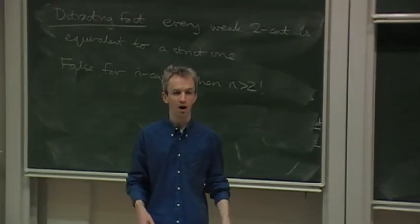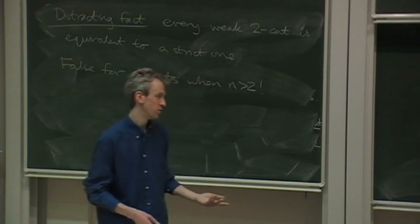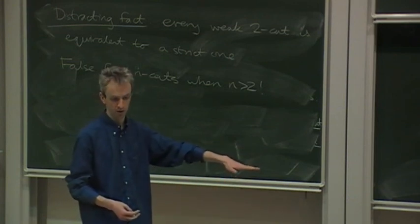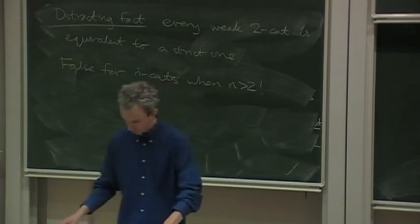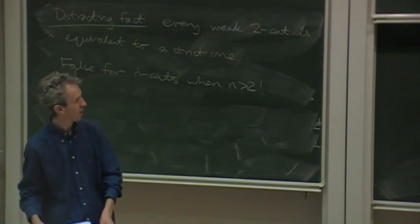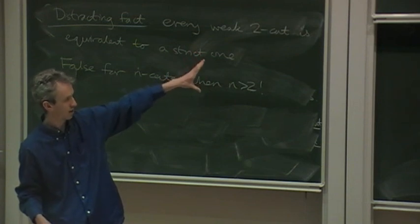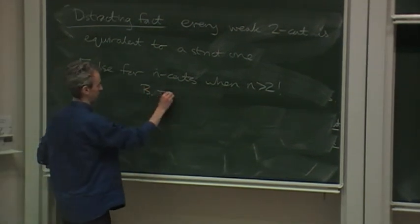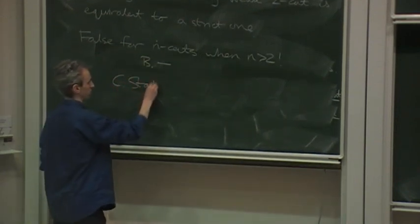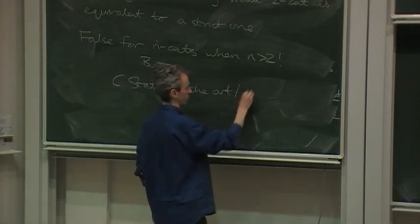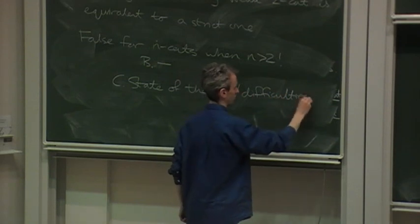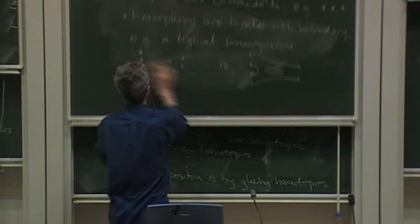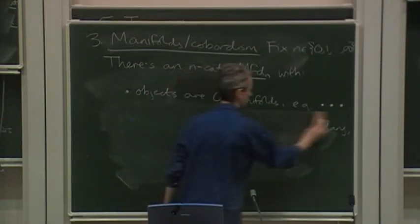So there's a kind of distracting fact which somehow is better known than is helpful. And this fact is that every weak 2-category is equivalent to a strict one. So at the level of 2-categories, it seems to be pointless to do this difficult weak stuff. The reason why it's distracting is that this fails for categories of higher dimension. And it's not just that it's possible to cook up some obscure example where it fails. It fails in almost all examples of weak n-categories when n is bigger than 2 that one is usually interested in. So it's a really fundamental thing and that's what I meant when I said that this isn't just some annoying technicality.